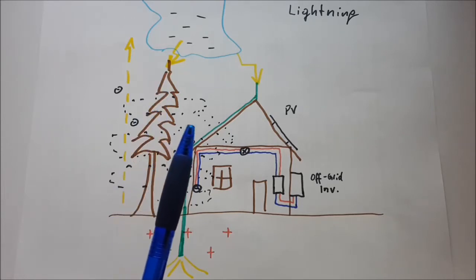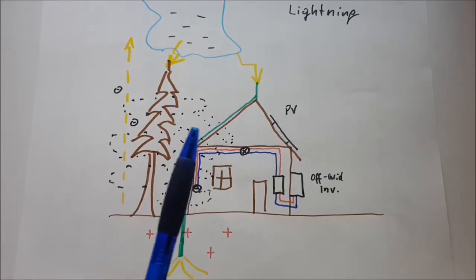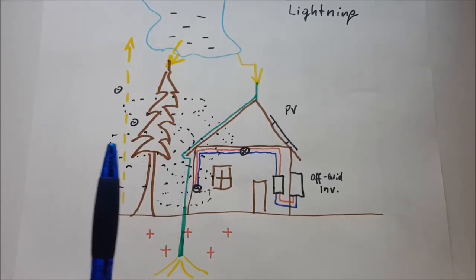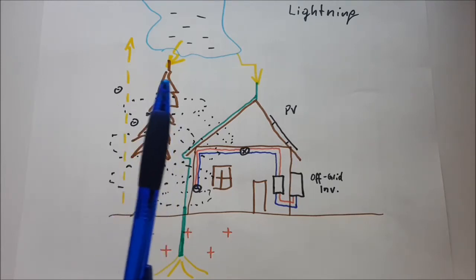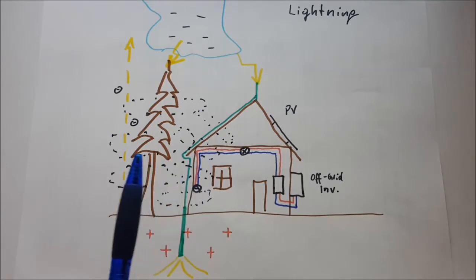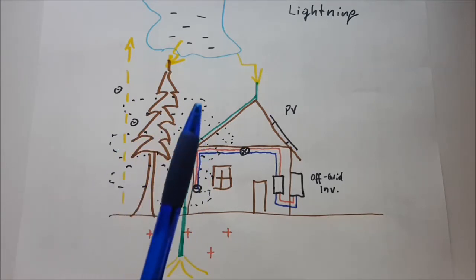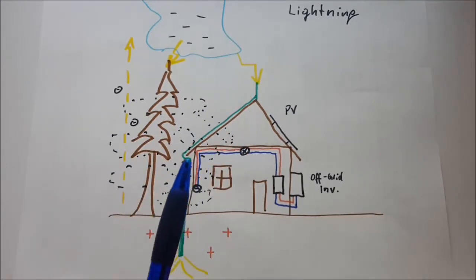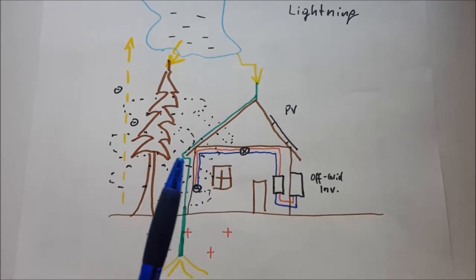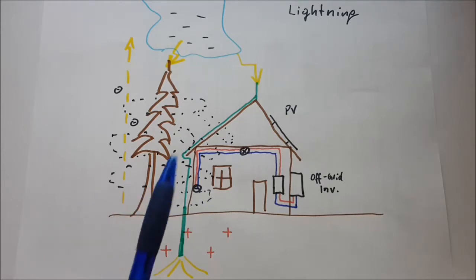Every time current is flowing, it is actually building up a magnetic field around it. Here in case of the tree, we have magnetic field lines going with the current, or when it travels through our lightning arrester, we have a magnetic field also building up.